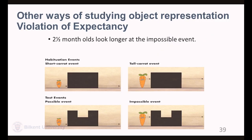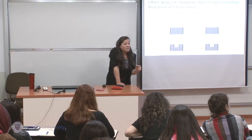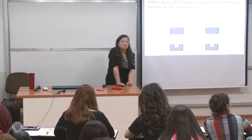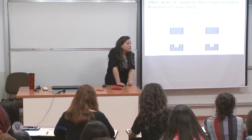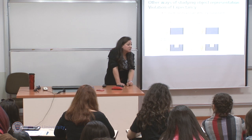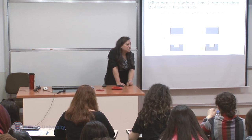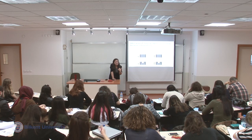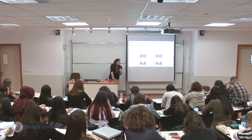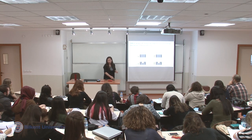So, if infants see the impossible event — the tall carrot not seen in the window but getting out from the other side — two-and-a-half-month-olds look longer. This means they're surprised, which means long before they will pass a standard object permanence task, they actually have some very basic expectation of an object's permanence.